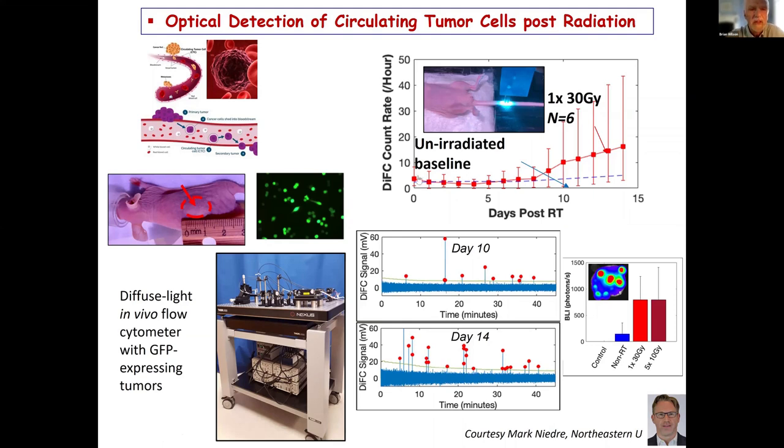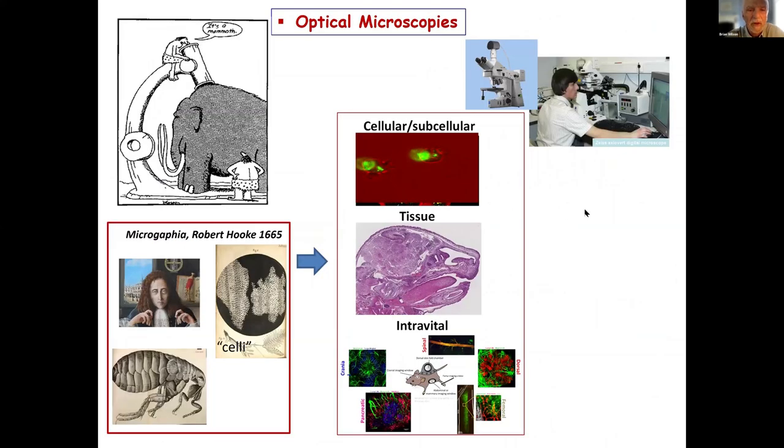Optical microscopies are an extremely important part of biomedical research. Just of historical interest, if you go back 350 years, this is the book Micrographia by Robert Hooke, who pioneered the use of microscopy. The word cell actually comes from his observations of these pores in a sample of cork, and he called those celli. Nowadays, optical microscopy, of which there are many different types, both linear and nonlinear, are very important at the cellular level, the tissue level, and also in a living subject.